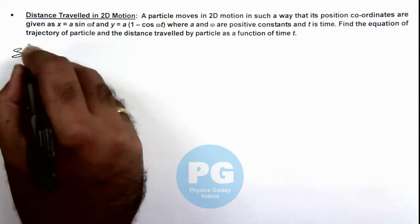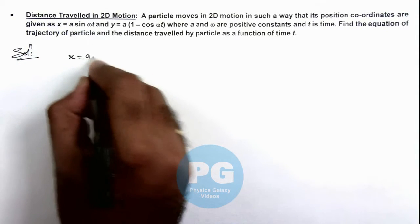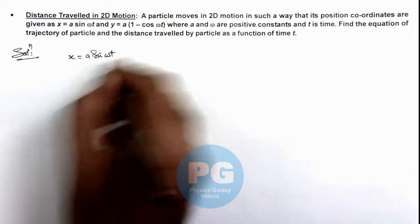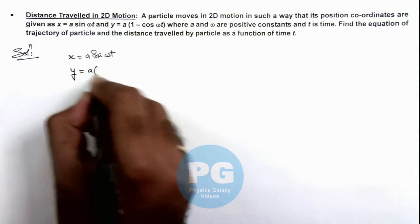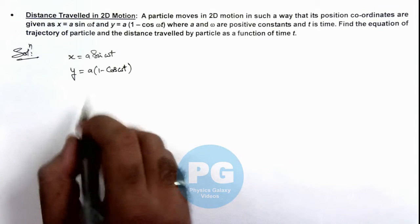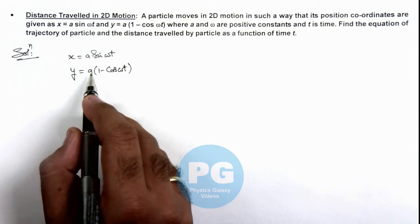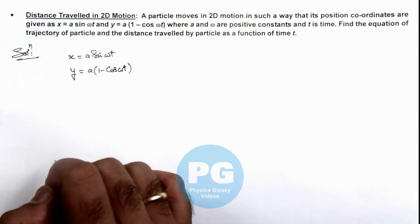In this situation we can see the position coordinates of particle are x = a sin(ωt) and y = a(1 - cos(ωt)). Now if we differentiate the two we'll get the velocity of the particle in its motion.